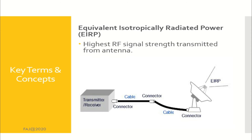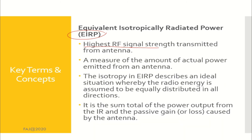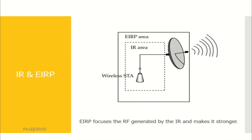The last component is equivalent isotropically radiated power, or EIRP. EIRP is the highest RF signal strength transmitted from an antenna. Another definition is a measure of the amount of actual power emitted from an antenna. The relationship between IR and EIRP: EIRP focuses the RF generated by IR, making it stronger.